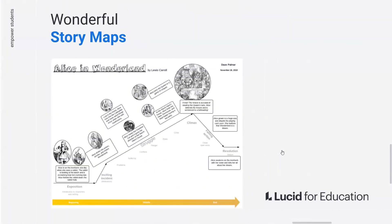Story maps are a fantastic way to teach students to work with story structure for better comprehension. This technique uses visual resources and representations to help students organize important elements of a story. Students learn to summarize the main ideas, characters, settings, and plot of an assigned reading.